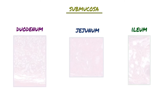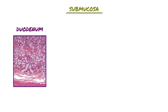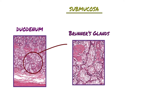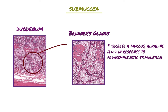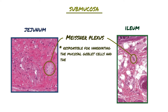The next layer of the small intestine underneath the mucosa is the submucosa, which consists mostly of dense, irregular connective tissue throughout the small intestine. The duodenum submucosa can be distinguished from other segments by unique glands called Brunner's glands, which are only seen in the duodenum and esophagus. Brunner's glands secrete a mucous alkaline fluid in response to parasympathetic stimulation, helping neutralize the acidic chyme that enters the duodenum from the stomach. The intrinsic innervation of the submucosa is from the parasympathetic Meissner's plexus, which innervates the mucosal goblet cells and the smooth muscle of the muscularis mucosa.